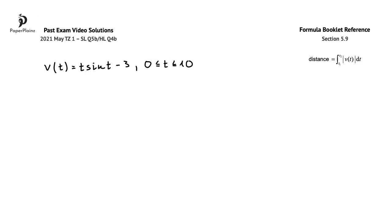In this question part, we have to find the total distance traveled by the particle. To do so, we'll use the following formula from section 5.9 of the formula booklet. Let's substitute into this formula based on the information given in the question.